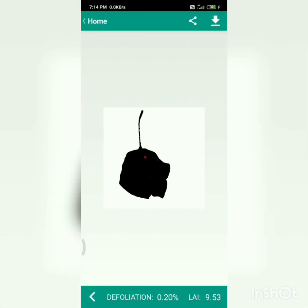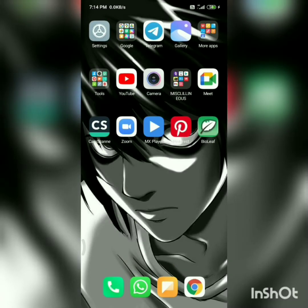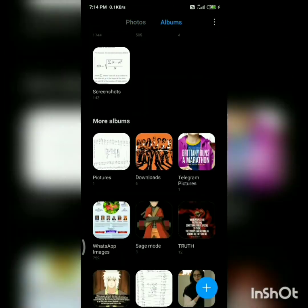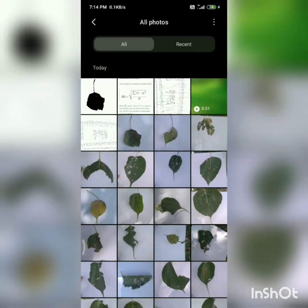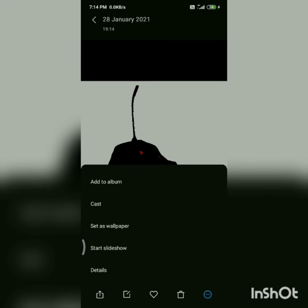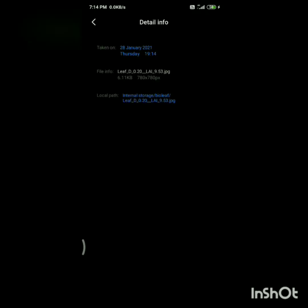I got the defoliation percentage and also leaf area index. I'm going to download that. Once you have downloaded, you have to check in your gallery and refresh it. Yes, I got this image. I'm going to click on the details. Here also you will get the leaf defoliation and leaf area index.